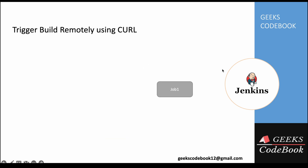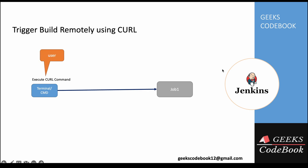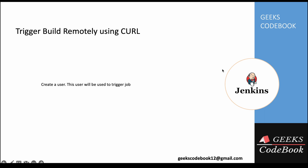Inside the curl command we'll have a specific user which is used to trigger the job. We'll make a POST call using curl. To achieve this, first we'll create a user, then instead of using a password we'll generate a token, and we'll use that token in curl to trigger any job.